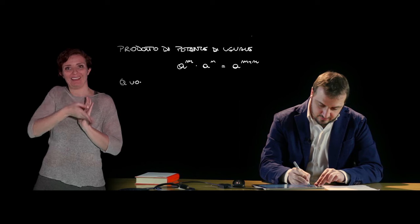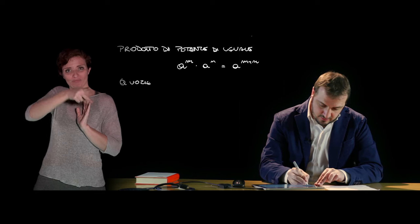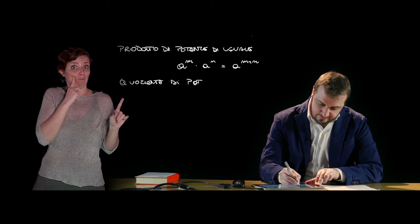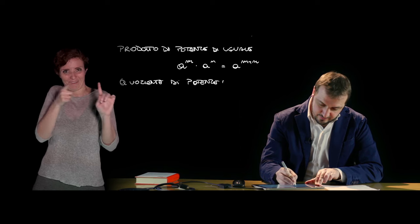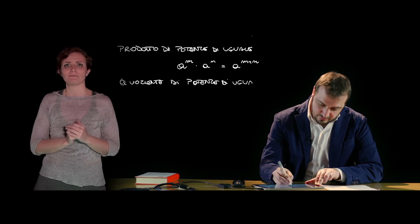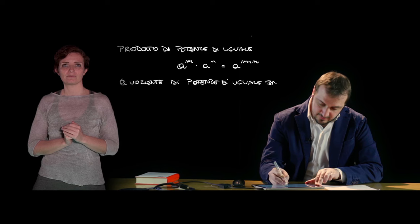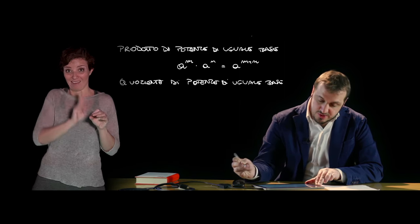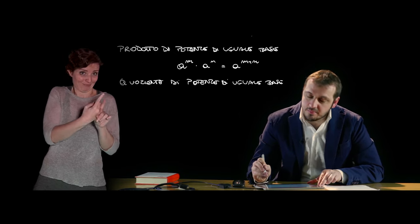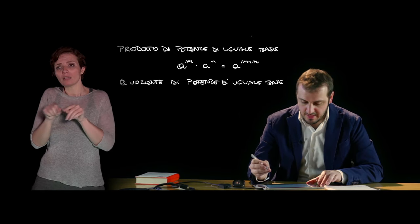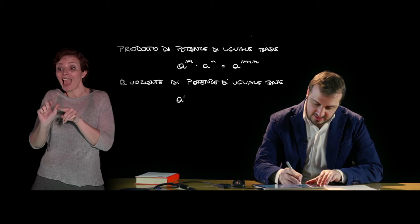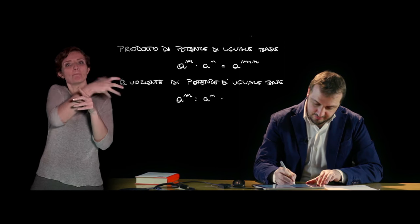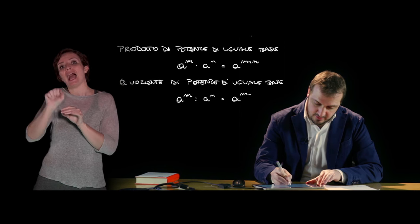Per quanto riguarda il quoziente di potenze di uguale base, in analogia con quanto visto per il prodotto, il quoziente di due potenze caratterizzate dalla stessa base è una potenza che ha per base la stessa base e per esponente la differenza degli esponenti, e quindi A alla m meno n.